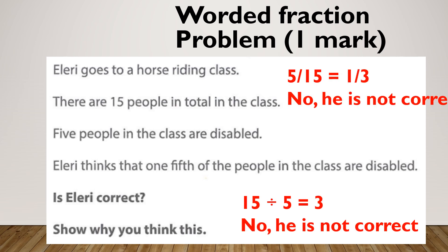It was in my simplified fractions amount and we could have answered it as in the fact that five fifteenths is equal to a third. So no, he's not correct. To do it from a fractions of an amount point of view, if there was 15 people in total and Ellery thinks that one fifth of the people are disabled, we're trying to work out what one fifth of 15 is. So 15 divided by five is three. Ellery thought it was going to be five. So no, it's not. It's three.